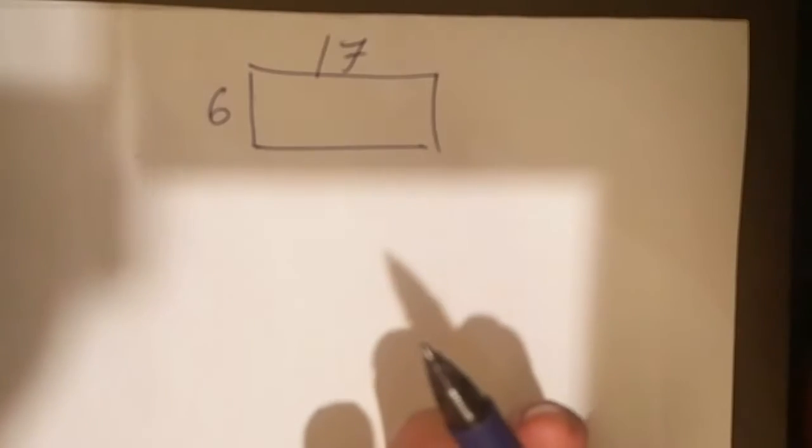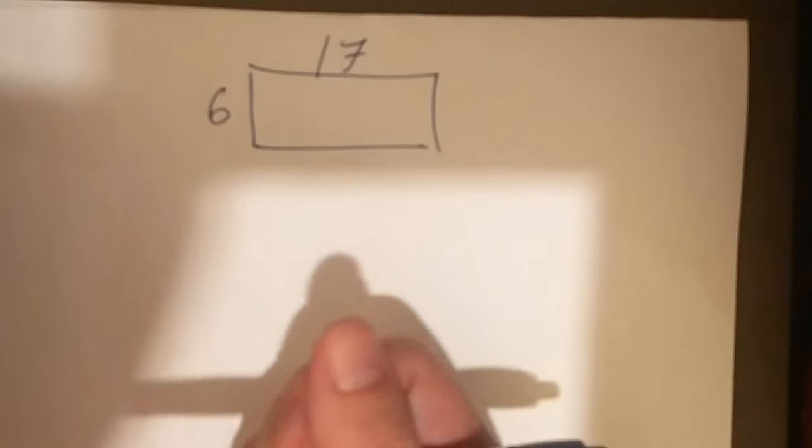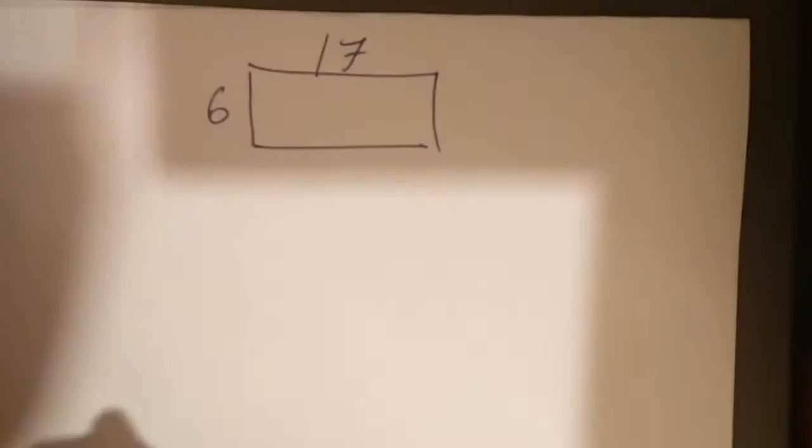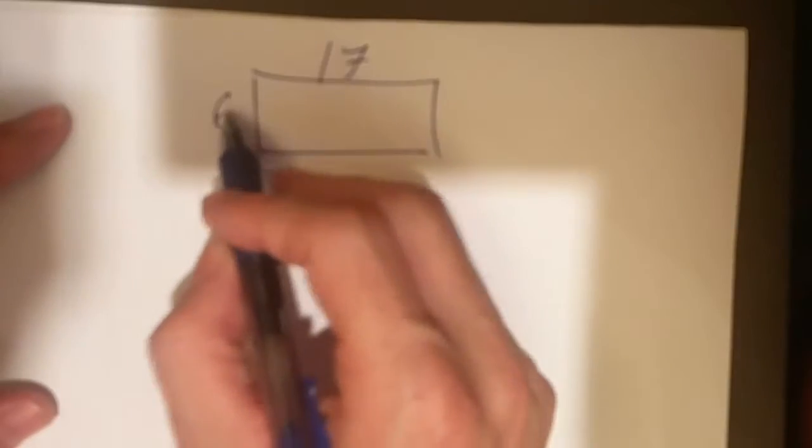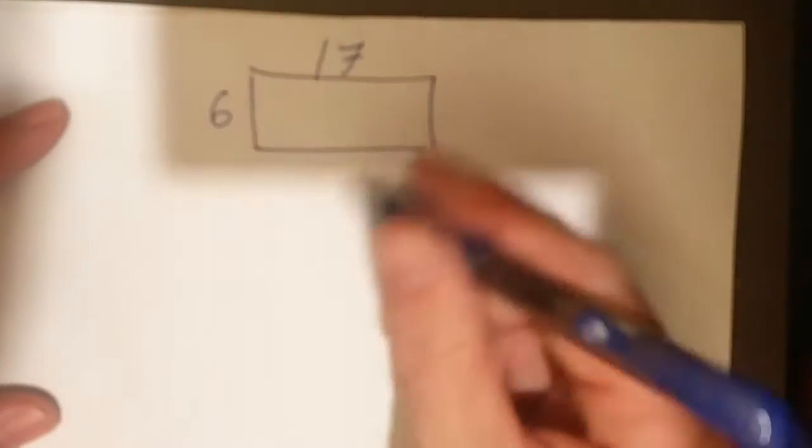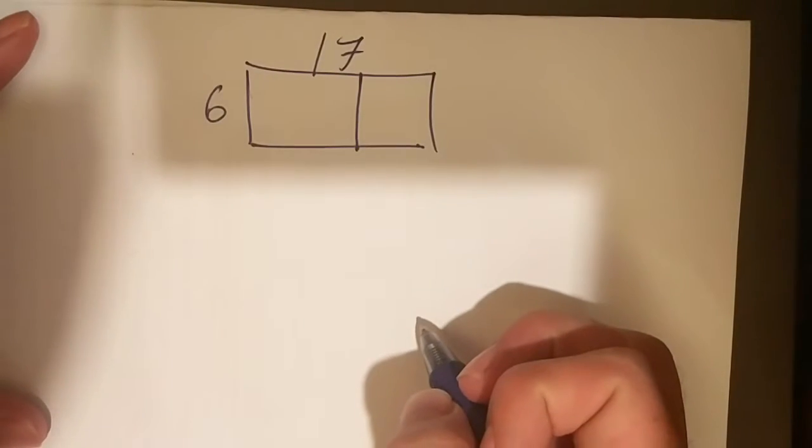Well, I can just do 6 times 17, but you know what? My math facts for my 17 multiplication table isn't very strong. So what can I do? Well let's check this out. I'm going to find some friendly numbers where I can split this up. I can split this up into two nice sections.